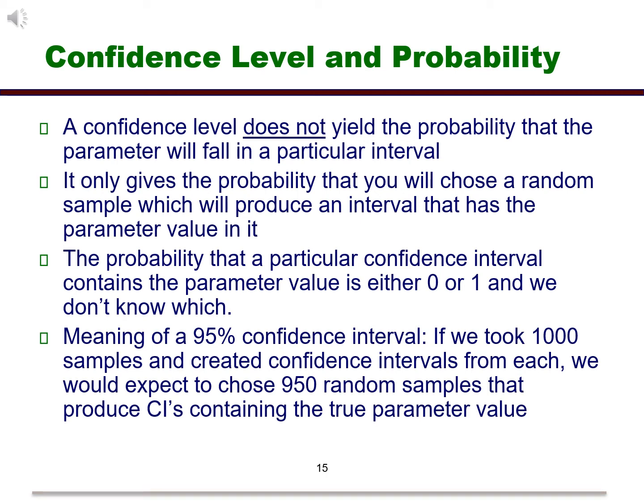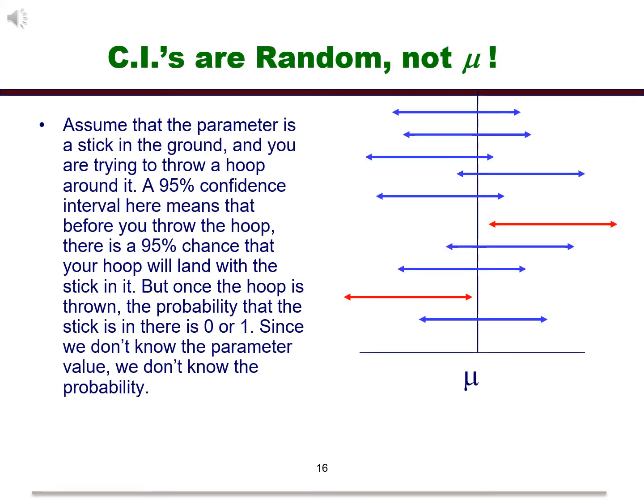The meaning of a 95% confidence interval is as follows. If we took 1,000 samples and created confidence intervals from each, we would expect to choose 950 random samples that produce confidence intervals containing the true parameter value. The main idea here is that the parameter itself is fixed. In other words, the value for the parameter is constant. What changes from sample to sample is the interval itself or the data.